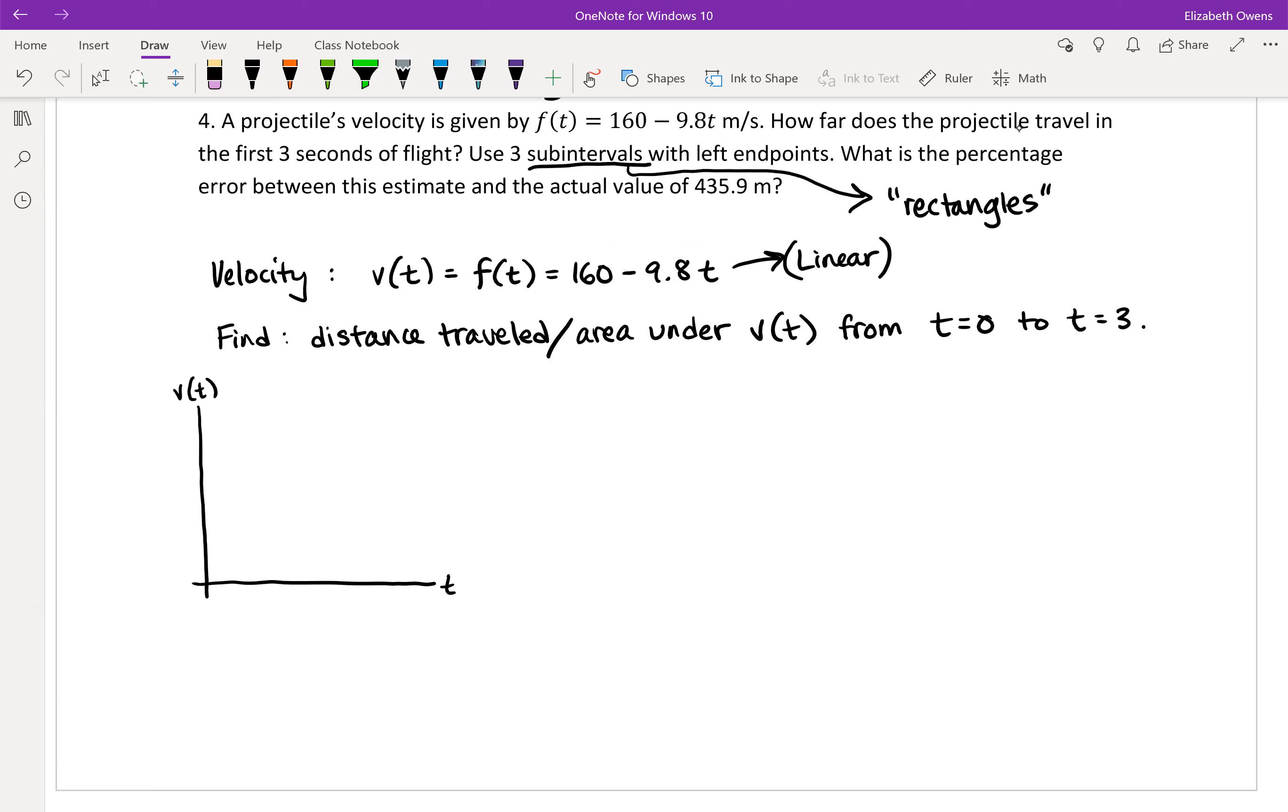Okay, so from that you can just make a really quick graph. Just say, oh, this is 160 and hey, our slope is negative. So it's a line and it does something like this. Okay. So there's your velocity function.